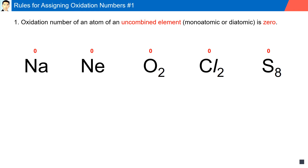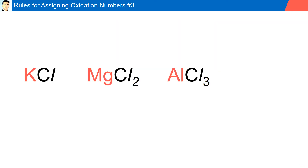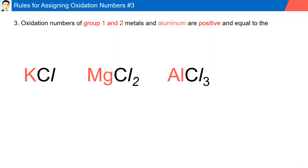Rule number two: the oxidation number of a monatomic ion is equal to the charge of the ion. For example, sodium has a one-plus charge, so its oxidation number is plus one. Calcium has a two-plus charge, so its oxidation number is plus two. Oxygen has a two-minus charge, so its oxidation number is minus two. Bromine has a one-minus charge, so its oxidation number is minus one.